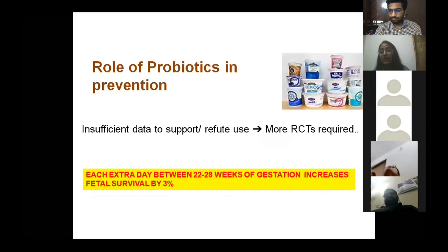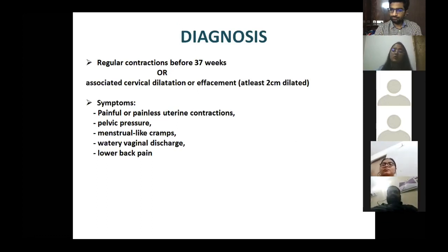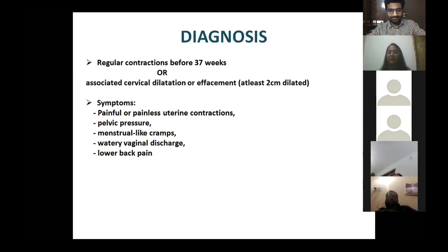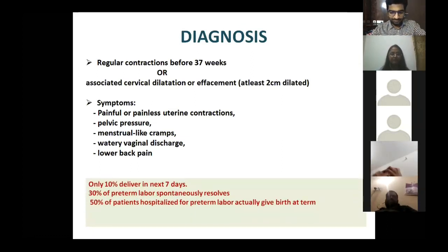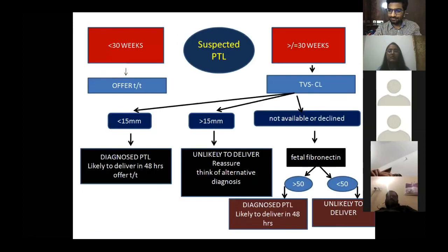When a patient presents with abdominal pain, pelvic pressure, menstrual cramp-like pain, leg pain, or watery vaginal discharge, assess for regular uterine contractions and cervical dilatation or effacement. Dilatation of at least two centimeters places the patient in the suspected category; more than four centimeters with effacement means established preterm labor. Importantly, only 10 percent of such patients will deliver within the next seven days, and 50 percent actually give birth at term.